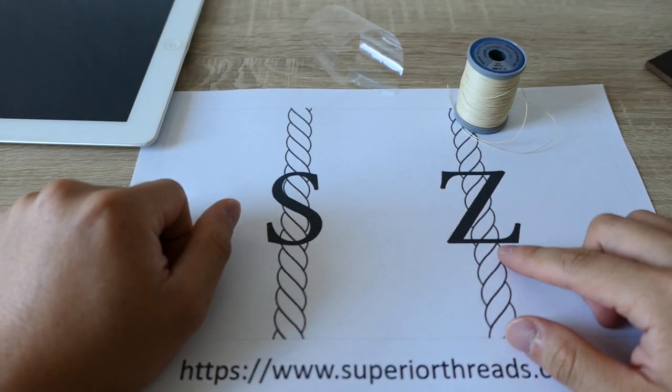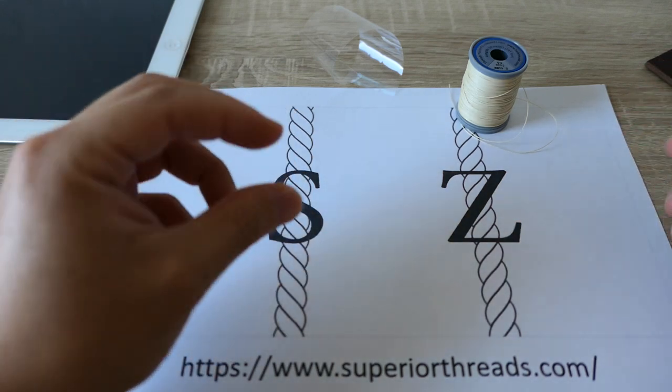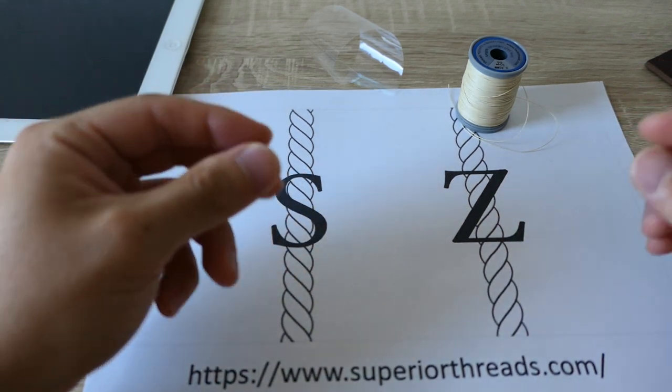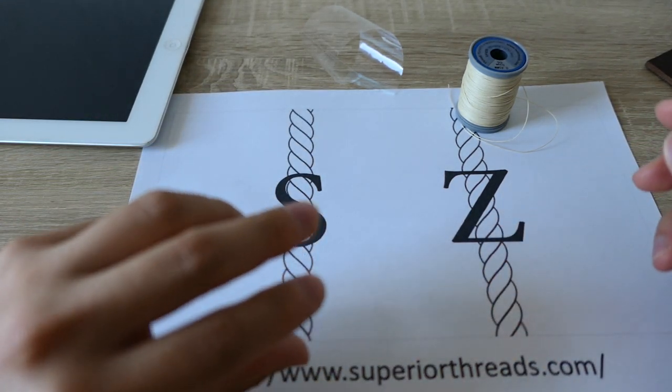Normally if you stitch with a Z-twist on your leather without anything, without wax or without bonding or coating of the thread, it will untwist while you stitch. So it's not that good.